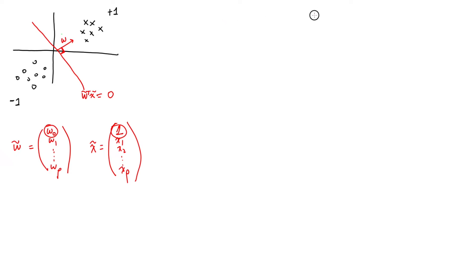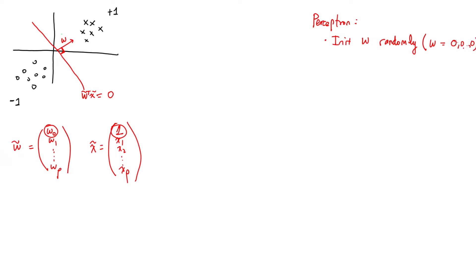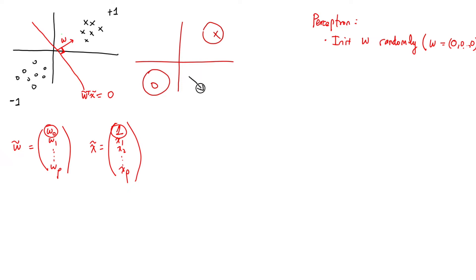The first step of the perceptron algorithm is to initialize w — usually people take w to be the zero vector, though that's not strictly necessary. So we get our two-class problem and initialize some w randomly, which gives us an initial weight vector w0 with a corresponding decision boundary perpendicular to it.